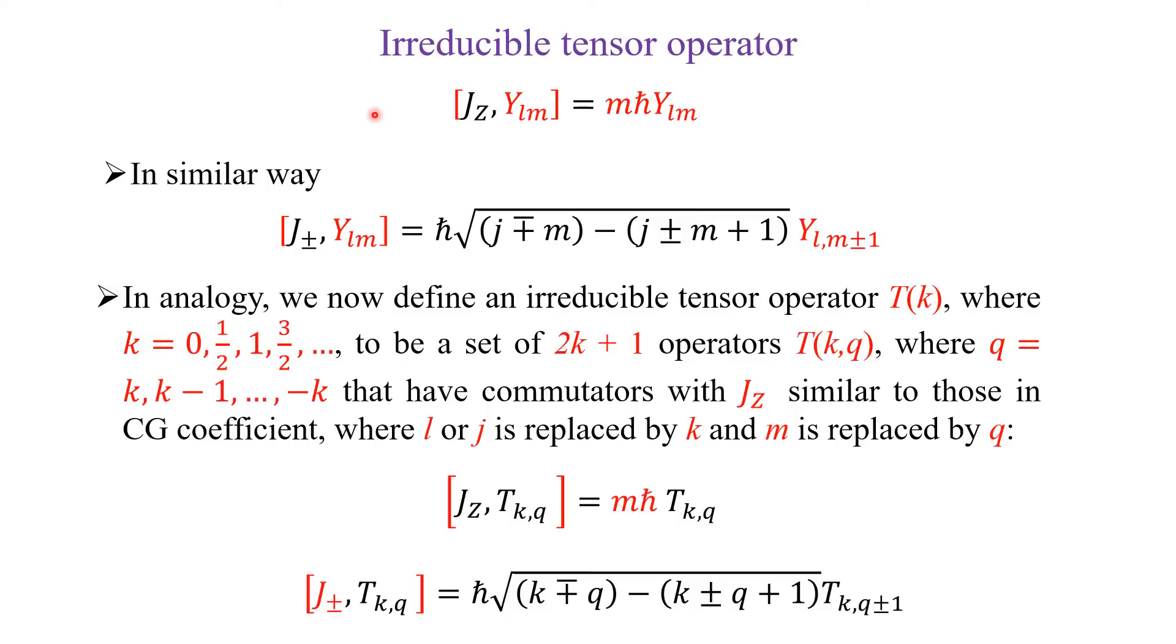In similar way, we can prove the commutation between J plus or minus, that is, rising and lowering operator, with Y_{l,m}, you will get the Clebsch-Gordan coefficient. That is, ℏ square root of (J ∓ M)(J ± M + 1).